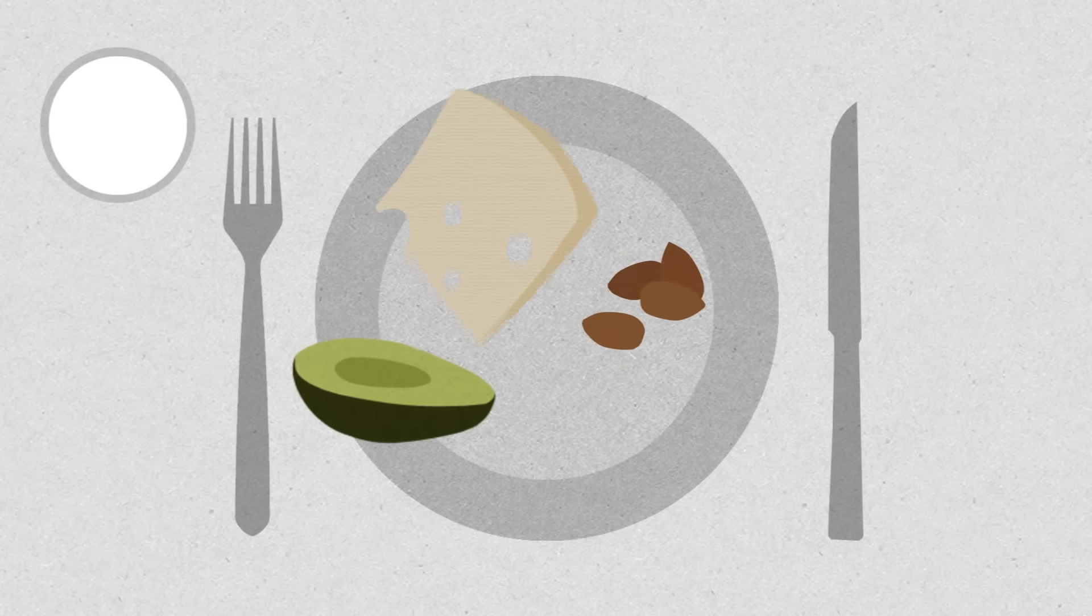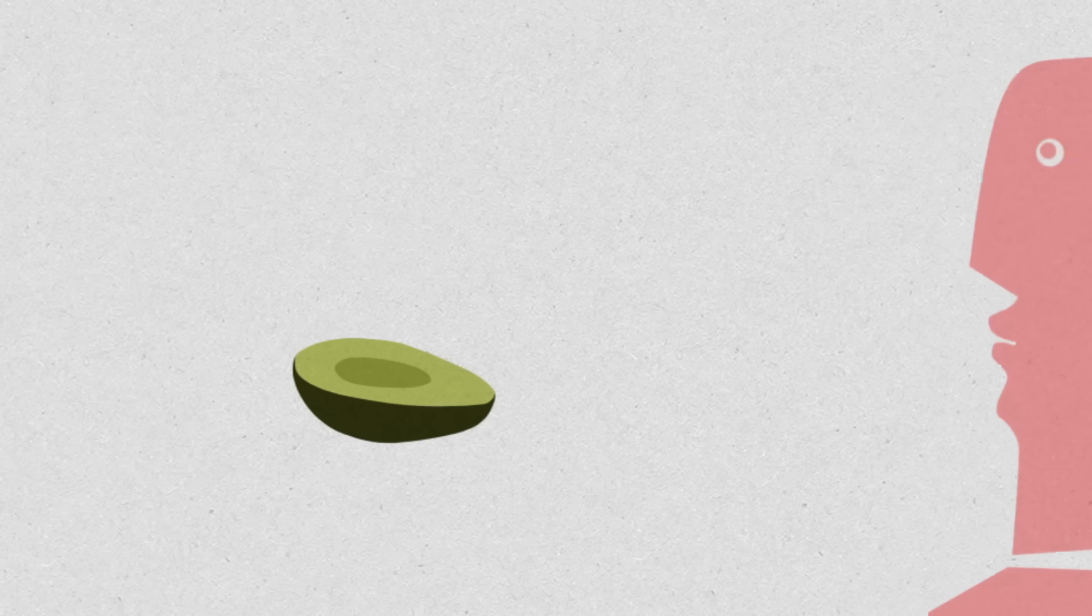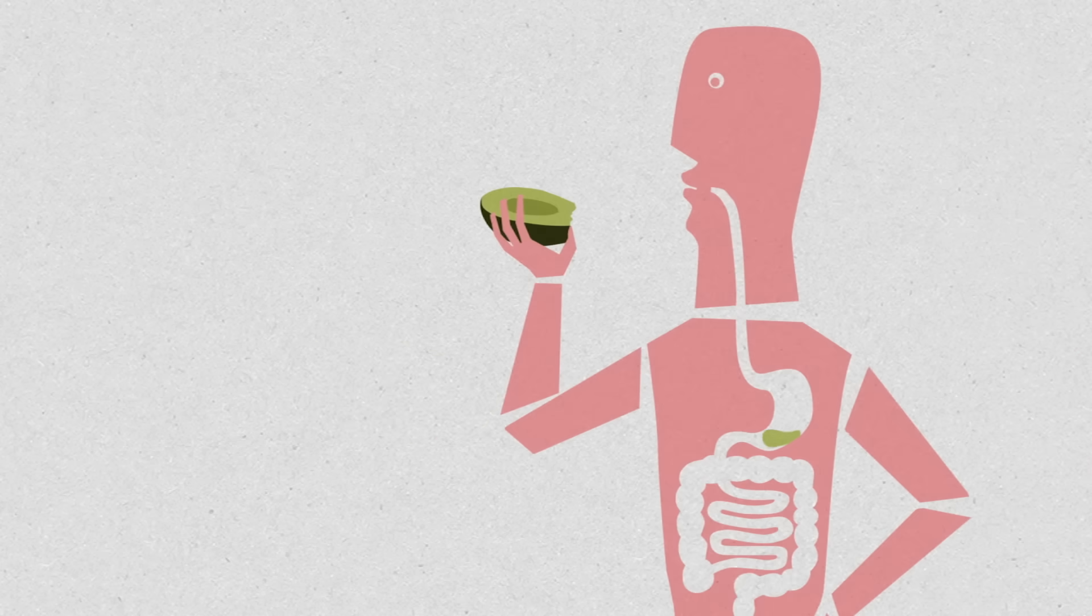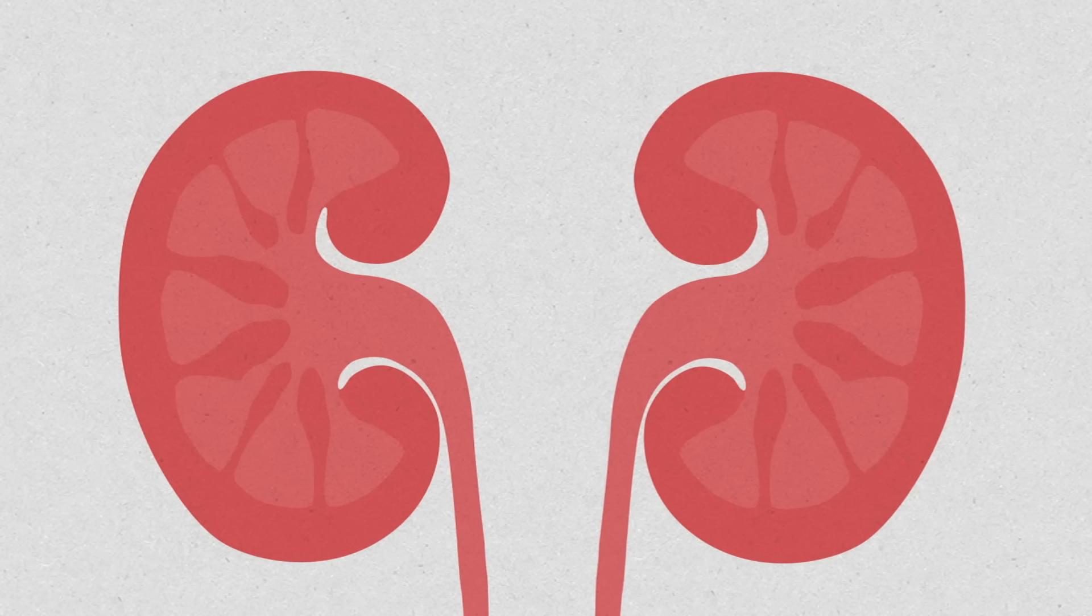Even though calcium is often found in stones, calcium in foods and beverages can actually help by binding to oxalate in the digestive tract before it can be absorbed and reach the kidneys.